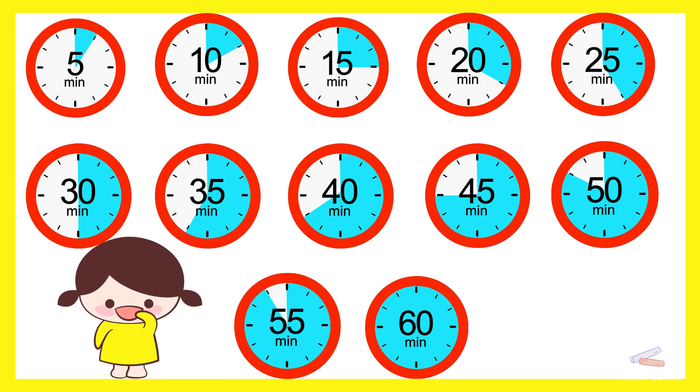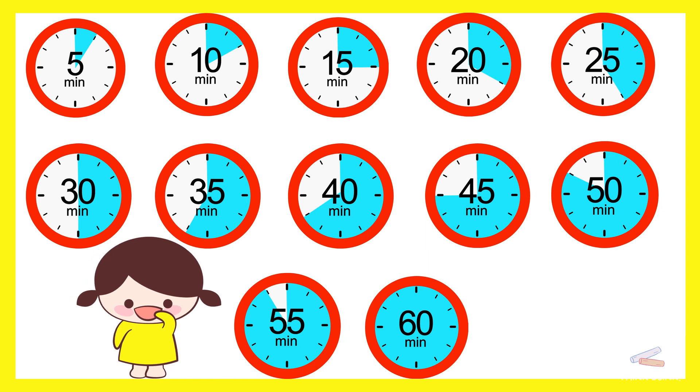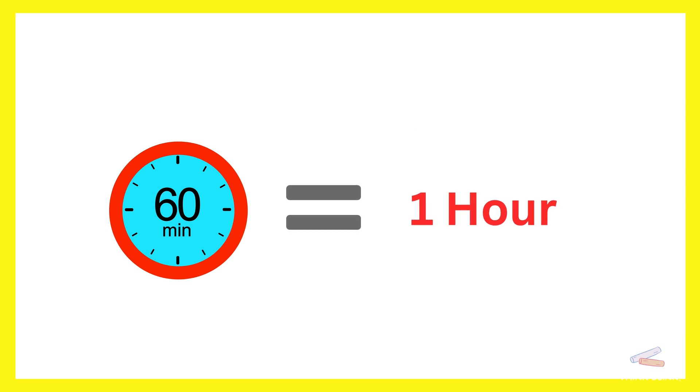Look at these little clocks. Each clock shows how the minute hand moves as we count by fives. When we count by fives, we can follow the minute hand all the way to 60 minutes, which is one full hour.